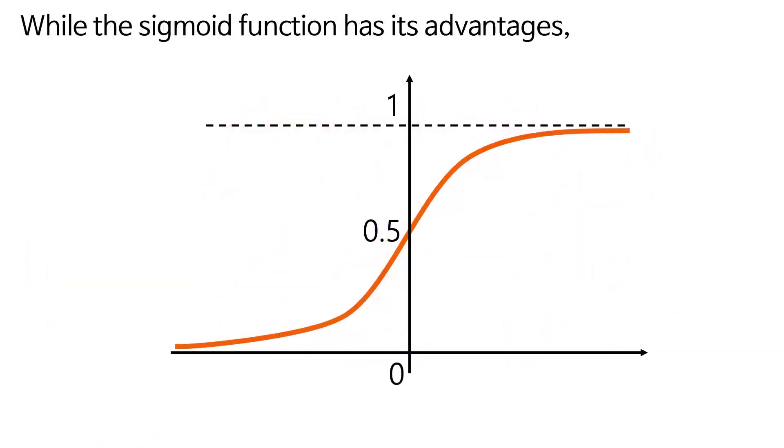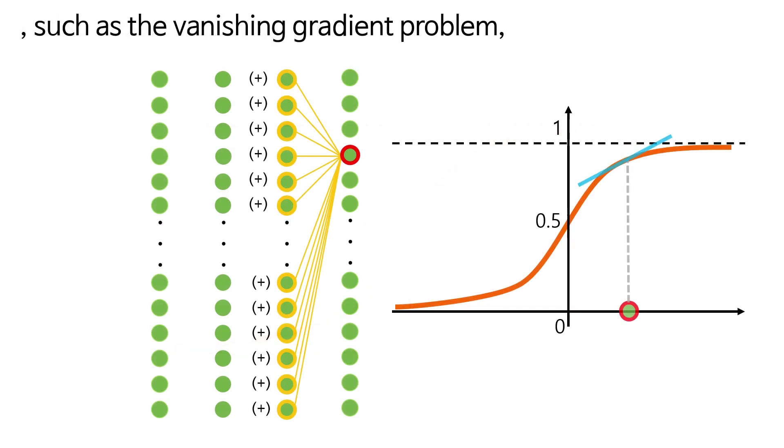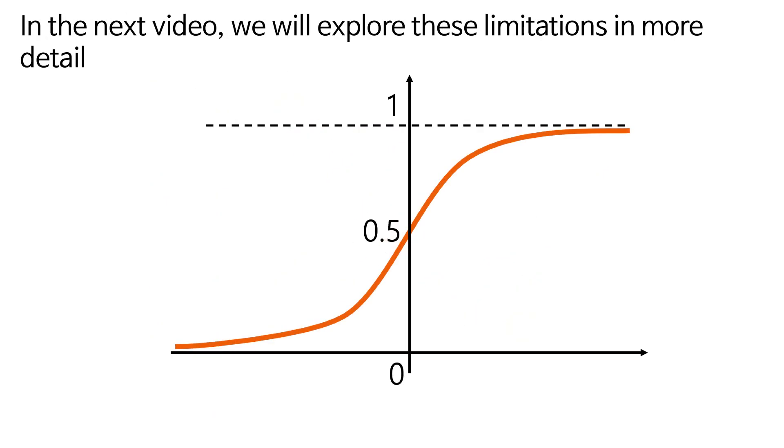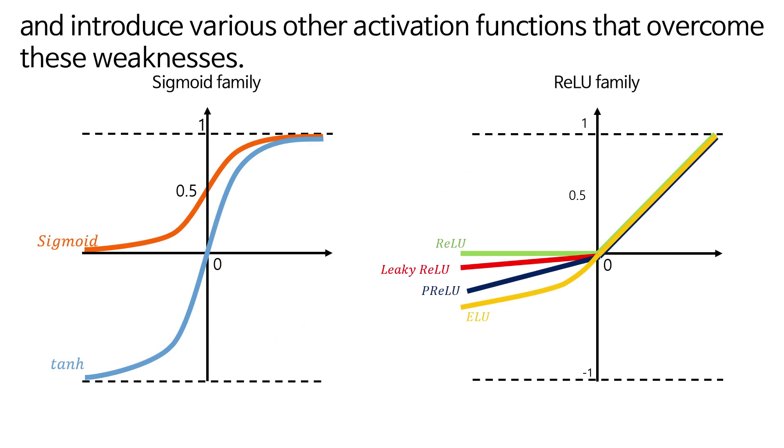While the sigmoid function has its advantages, it also has limitations such as the vanishing gradient problem and oscillations during weight updates. In the next video, we will explore these limitations in more detail and introduce various other activation functions that overcome these weaknesses.